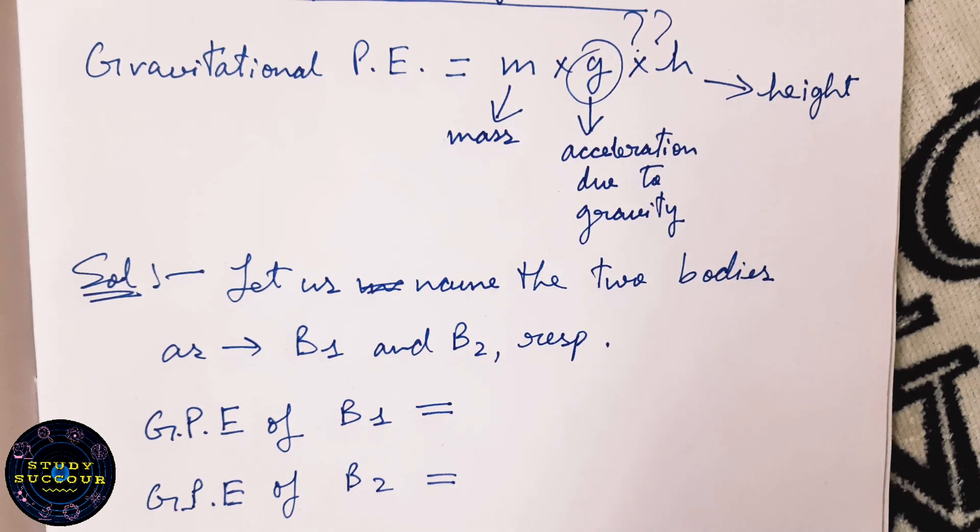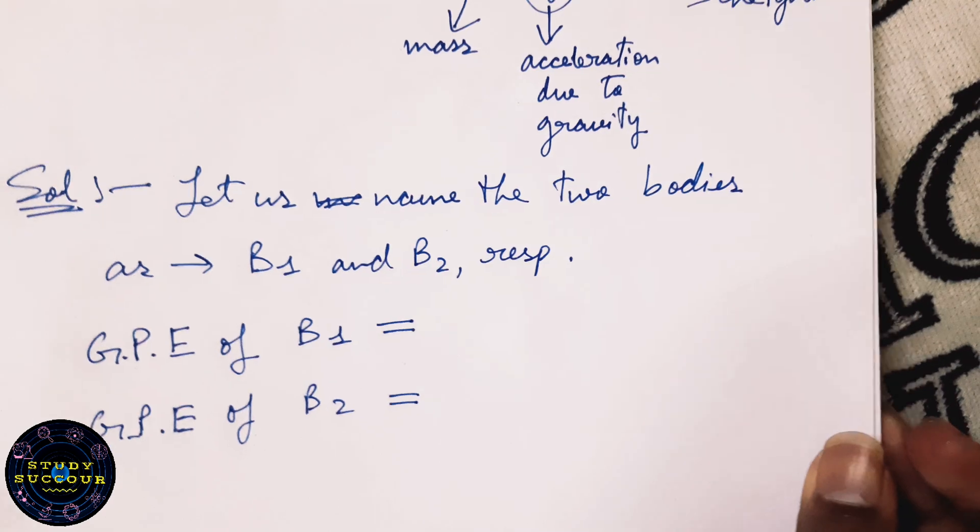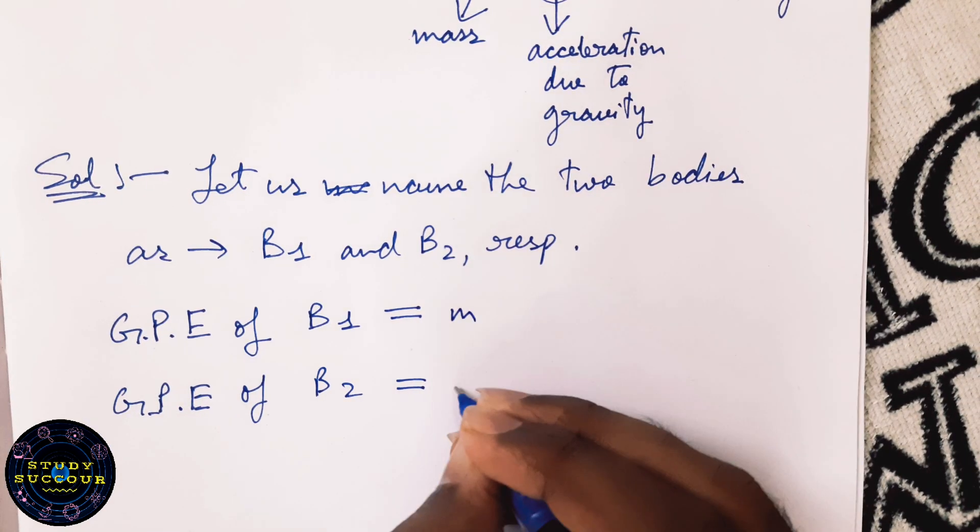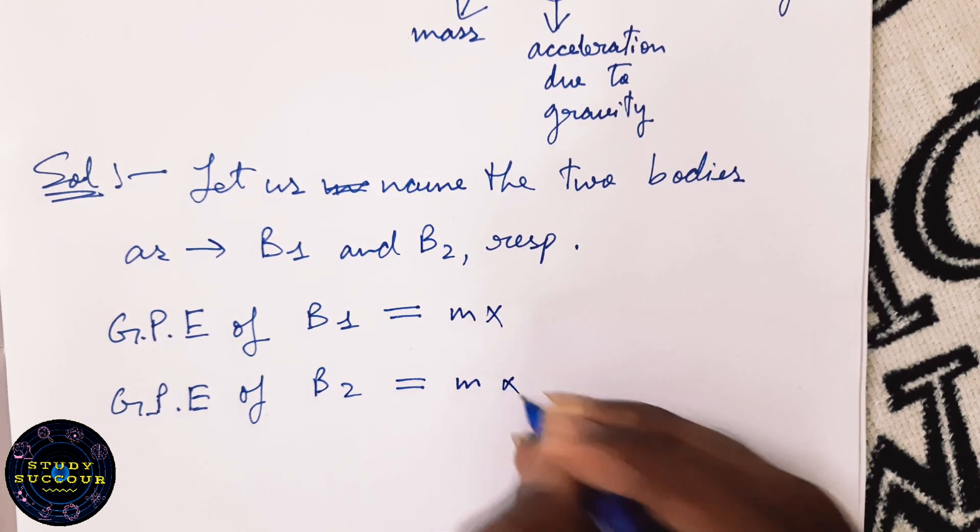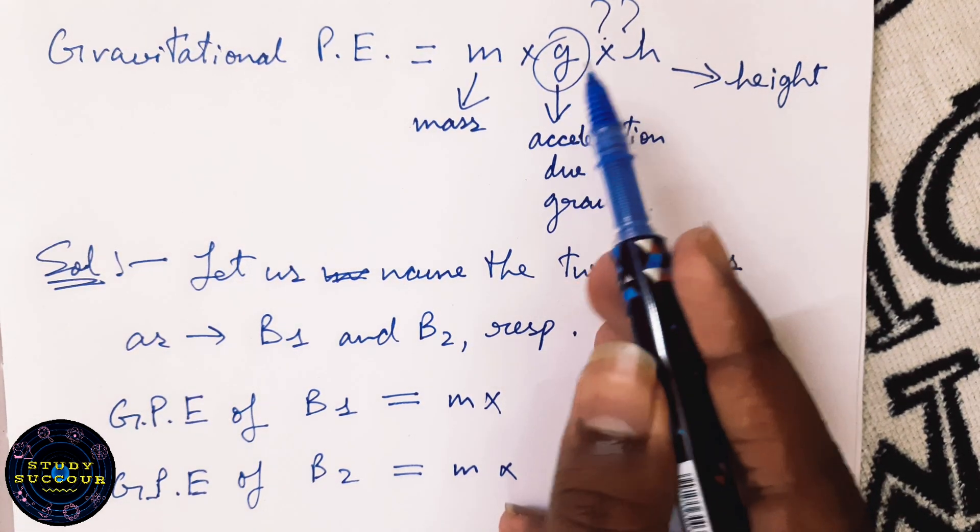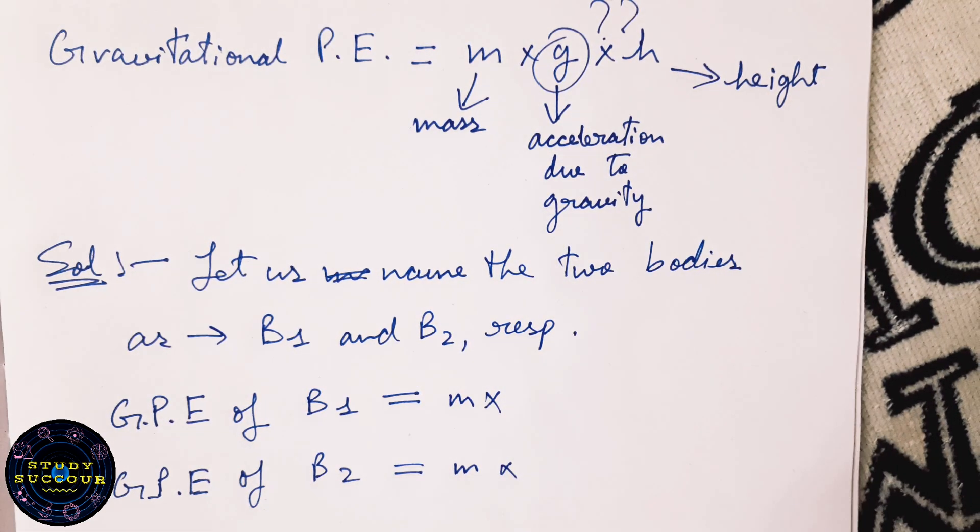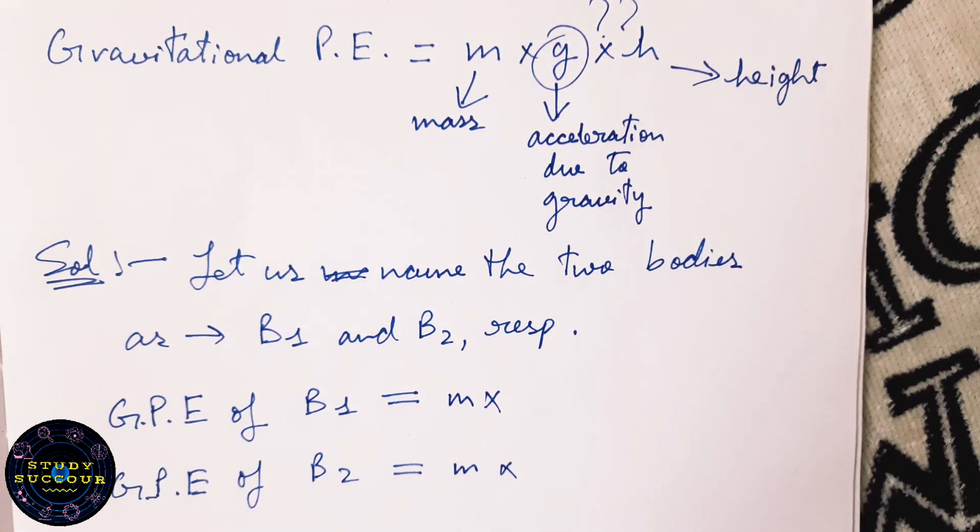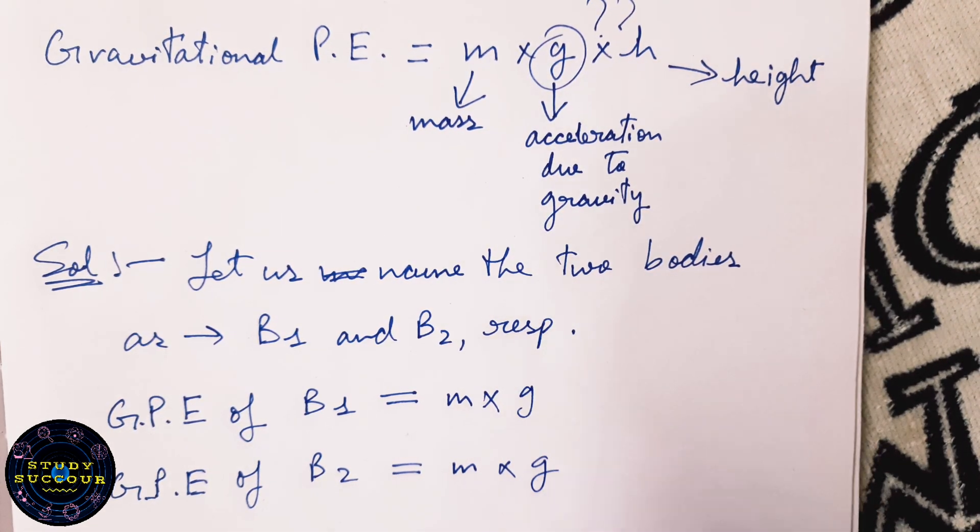For both cases the masses are same. As you can see it is given already in the problem, M. Now for G or the acceleration due to gravity, it is a constant value as I told earlier. Hence, it will be same for both the bodies.